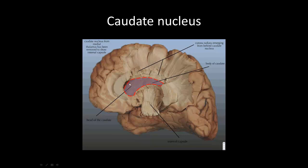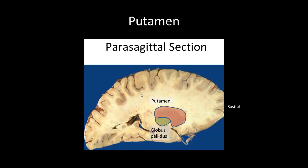Here is the head of the caudate, and the lateral ventricle is present just medial to the caudate nucleus. The lateral ventricle is medial to the anterior caudate or head of the caudate. Next we have the putamen, highlighted in pink — note this section is flipped so rostral is on the other end. The putamen is another one of the basal nuclei, involved in movement.